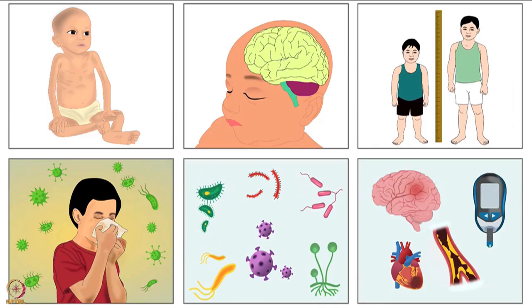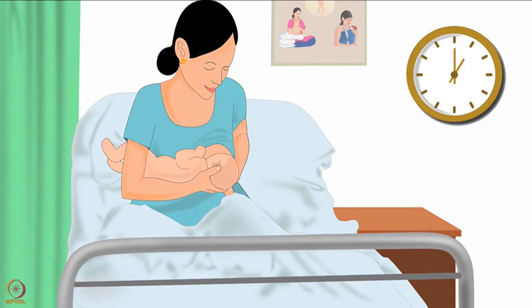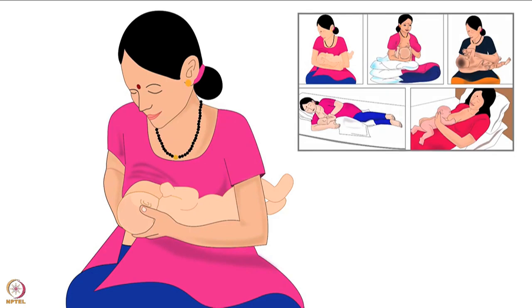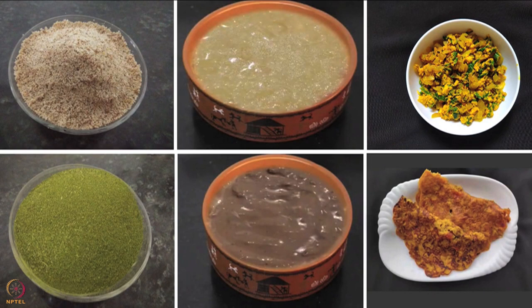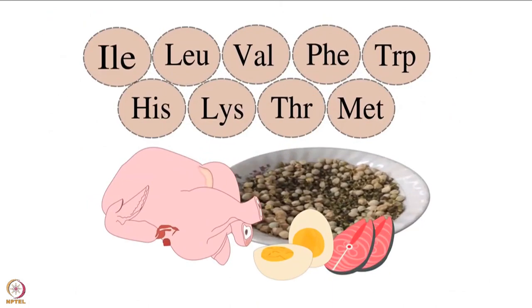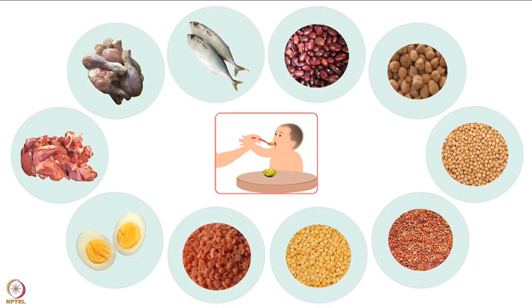Nutrition-related problems can be prevented by breastfeeding a baby. A baby should be breastfed within the first hour of its birth. Exclusive breastfeeding till 6 months with correct techniques is important. After 6 months, along with breast milk, nutrient-dense food should be given. This nutrient-dense food is called complementary food. Complementary food should be rich in all the nutrients. Protein is one of the important nutrients — it helps in growth and development. Hence, it is advised to include protein-rich food sources in daily diet.